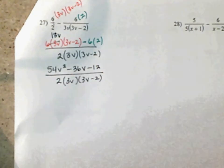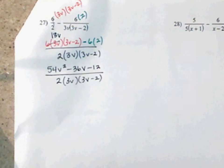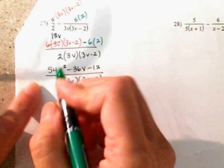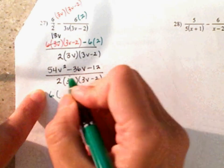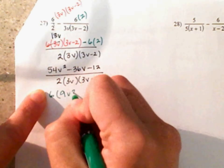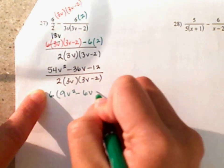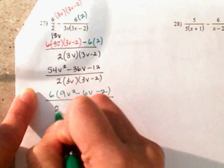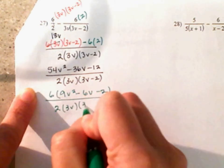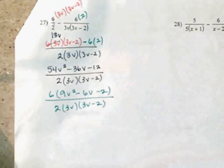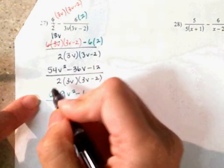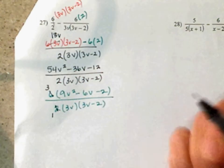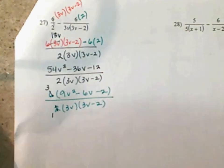Bring down your denominator. Next step — let's see if you can factor anything out. I think 6 goes into all of them, so I'm going to factor out 6. And when you do, you have 9V squared minus 6V minus 2, all of it divided by 2 times 3V times 3V minus 2. 2 goes into 6 three times; 2 goes into 2 one time. Try to simplify as you are going.